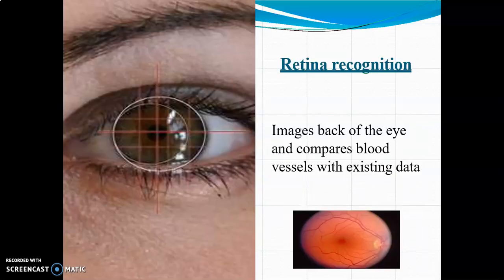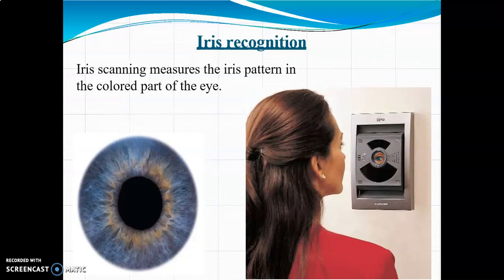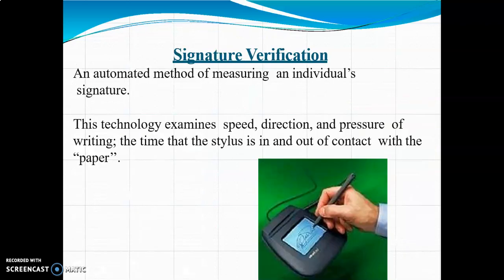For retina recognition, the system images the back of the eye and compares blood vessels with existing data. For iris recognition, the system scans and matches the iris pattern and the color part of the eye.